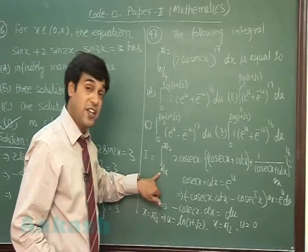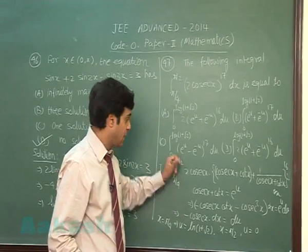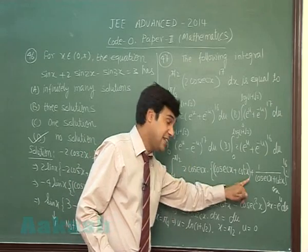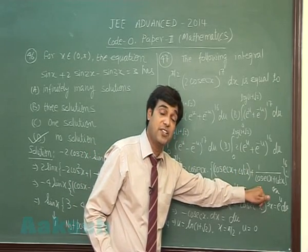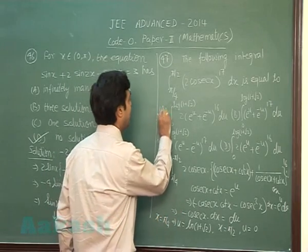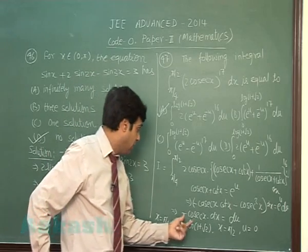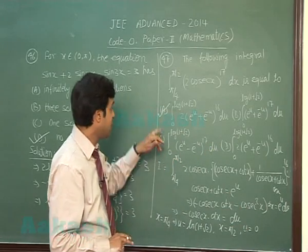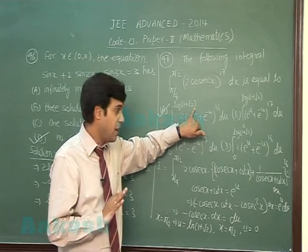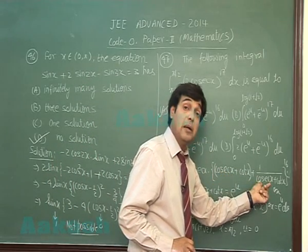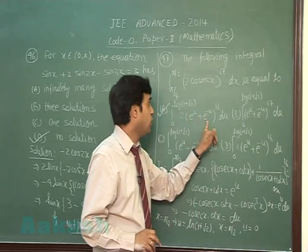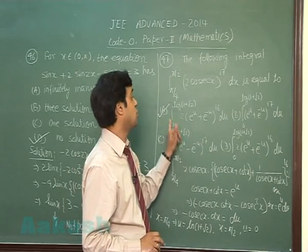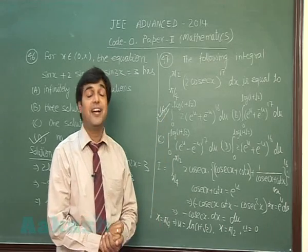The integral changes limits from log(1 + √2) to 0; with −cscx dx = −du, it becomes ∫ 2(e^u + e^(−u))^16 du. Interchanging limits from 0 to log(1 + √2) removes the negative sign. So the answer matches option A: 2∫(0 to log(1+√2)) (e^u + e^(−u))^16 du. Option A is correct.